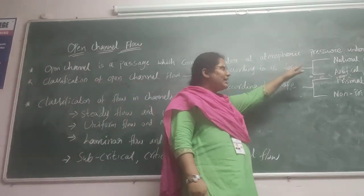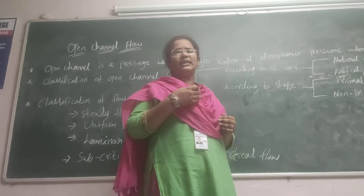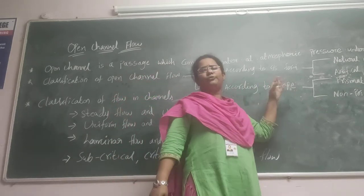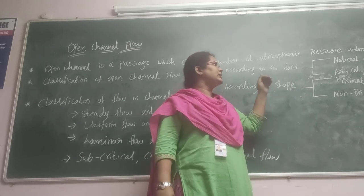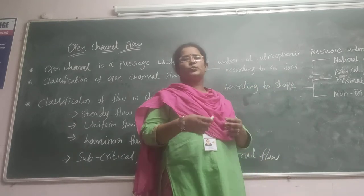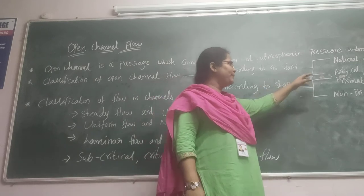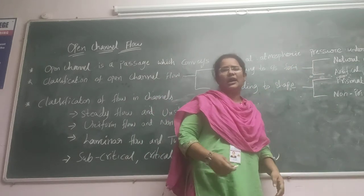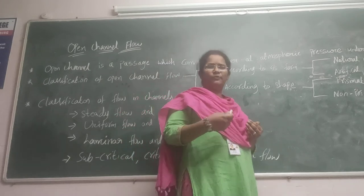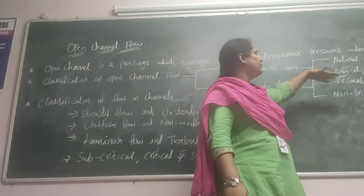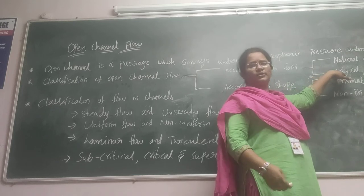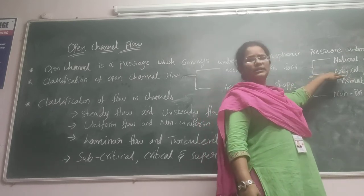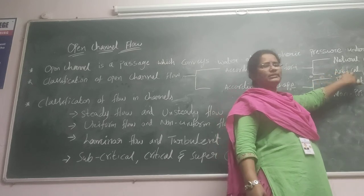Natural Channel has no regular shape and size and does not have uniform flow. Artificial Channels are those which are made by human beings. For example, Artificial Channels are those which are constructed to flow water, like canals and drainage systems.